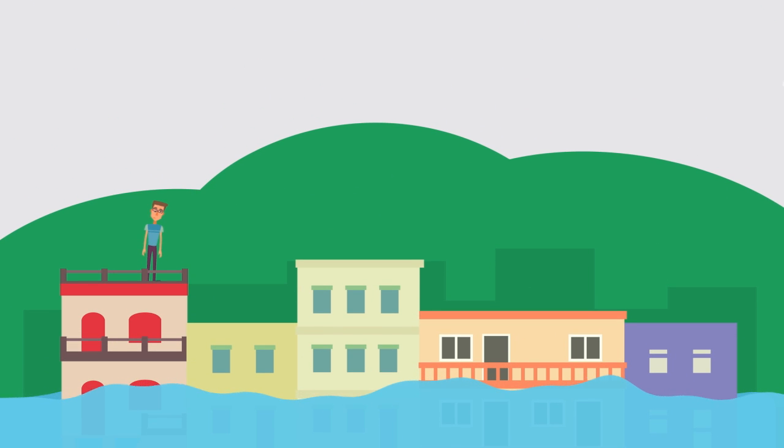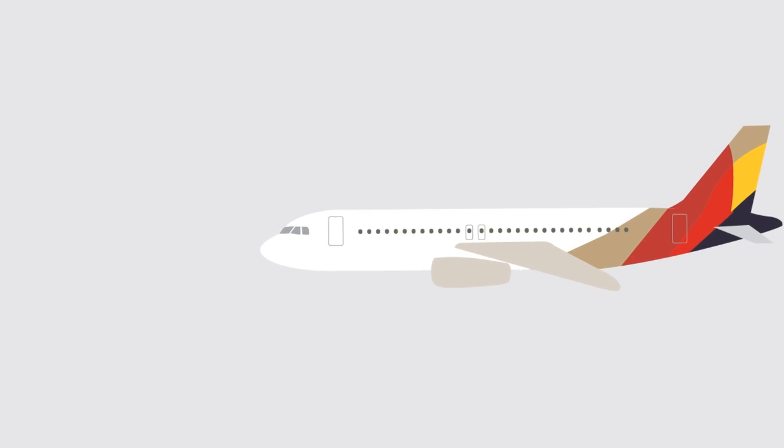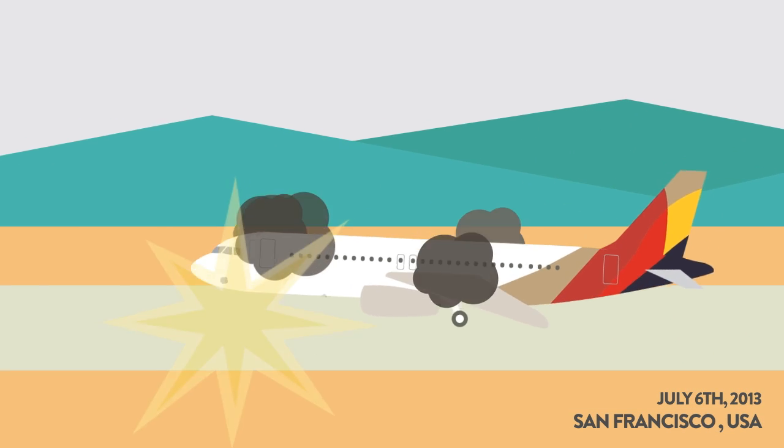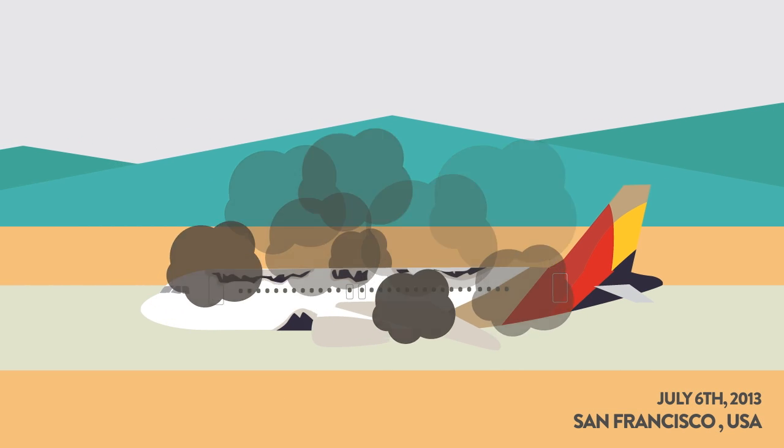During a normal landing approach to San Francisco International Airport, the flight crew of Asiana Airlines made mistakes, which resulted in a crash that destroyed the aircraft.